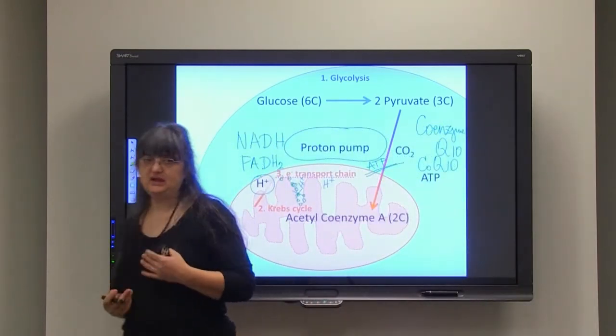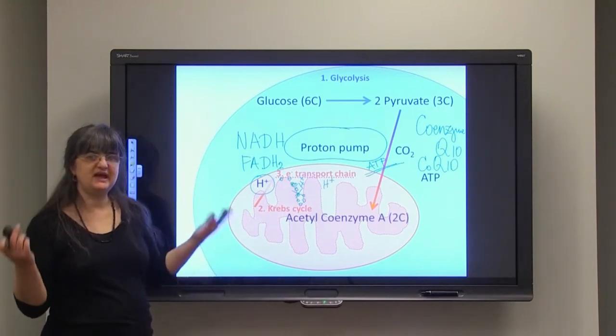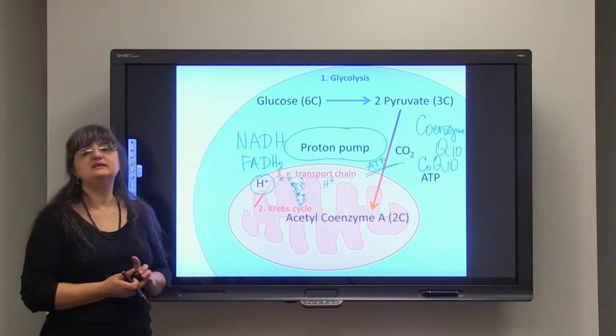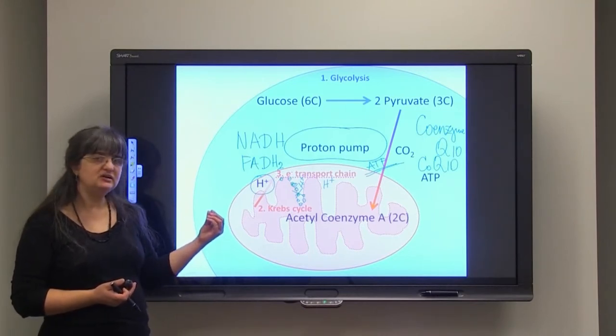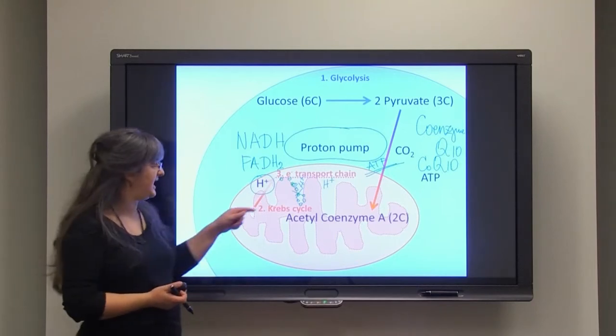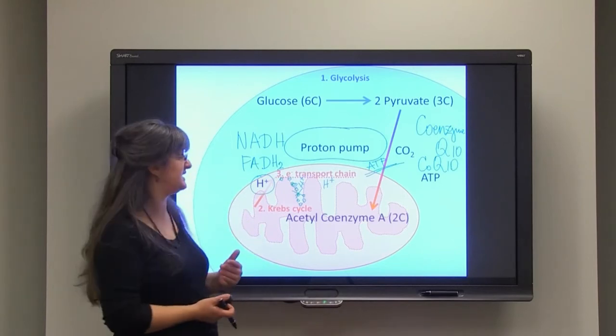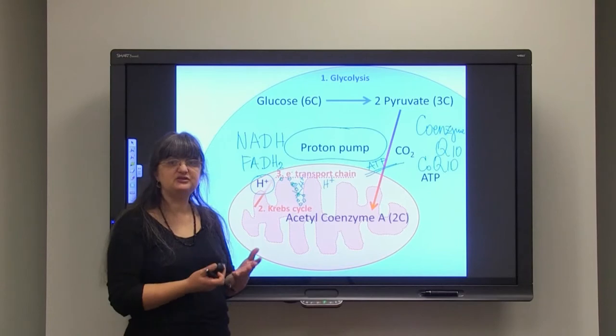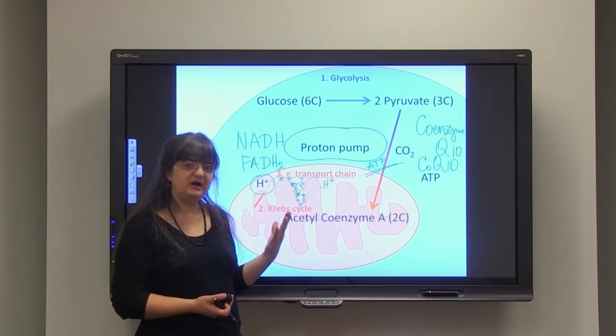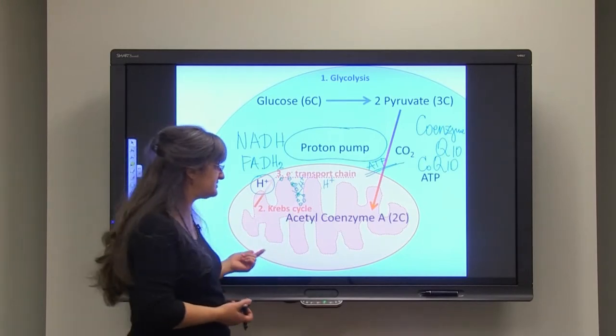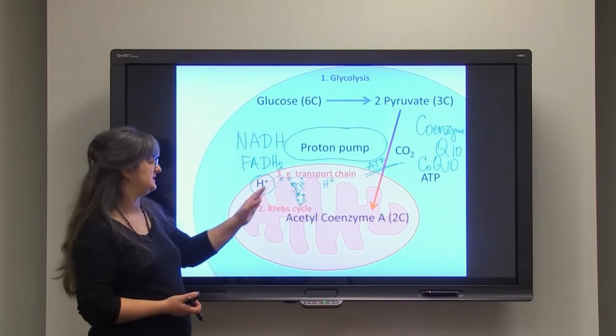The other name for coenzyme Q10 is ubiquinone, which means it's present everywhere. We need energy. In order to utilize it, you can think about all the glucose that you can take if you don't have that particular coenzyme Q, which our body can actually make in most cases. That can be trouble. We cannot utilize that energy. Which gives idea about why vitamins are so important because coenzyme Q is vitamin. It is part of the enzyme that is needed in this process.